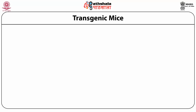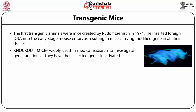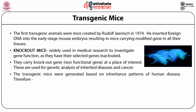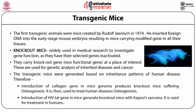Transgenic mice: the first transgenic animals were mice created by Rudolph in 1974, who inserted foreign DNA into early-stage mouse embryos resulting in mice carrying modified genes. Knockout mice are widely used in medical research to investigate gene function, as they have a selected gene inactivated — carrying a non-functional gene in place of the gene of interest. This can be used for genetic analysis of inherited diseases and cancer. For example, introduction of the collagen gene can produce knockout mice suffering from osteogenesis, and introducing the HIV TAT gene produces knockout mice useful for treatment of Kaposi's sarcoma.